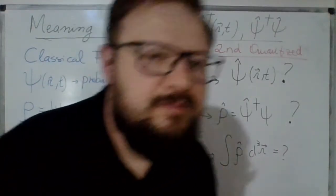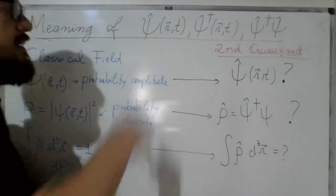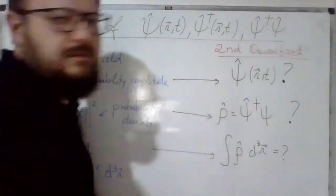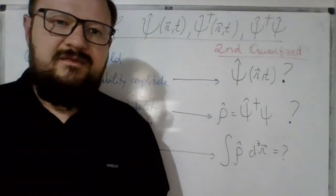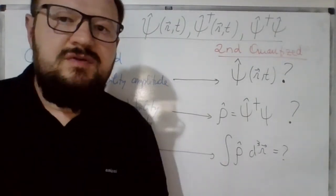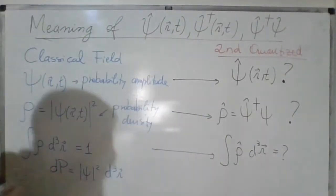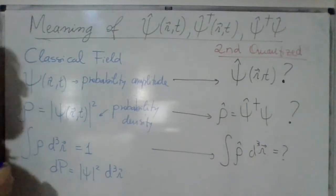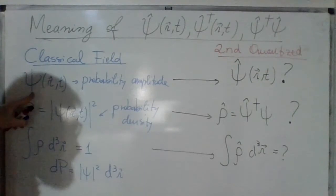Hi everybody! Continuing the previous lecture, let's try to interpret what the operators psi, psi dagger, and the product psi dagger psi are. We will use the fermionic fields for an electron, or for a non-relativistic electron.